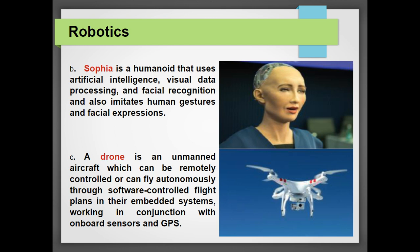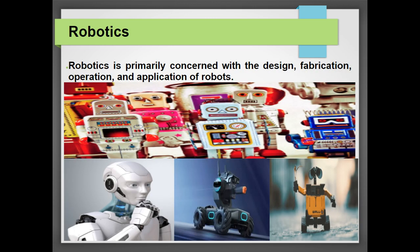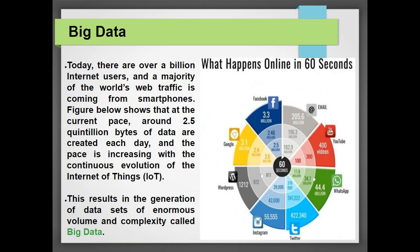A drone is an unmanned aerial craft which can be remotely controlled or can fly autonomously through software-controlled flight plans in its embedded system, sensing different kinds of movements given by the person handling the remote control. So there are different areas where sensors are used. A sensor is the prime component of any artificial intelligence.